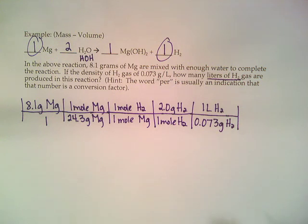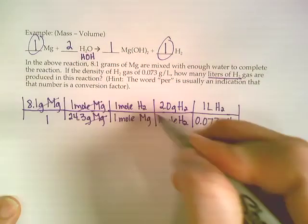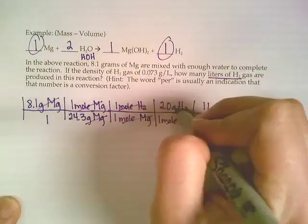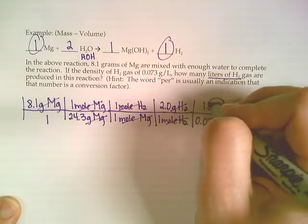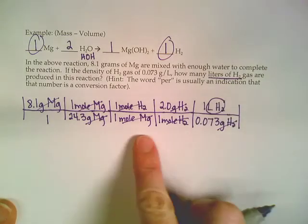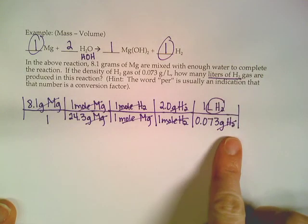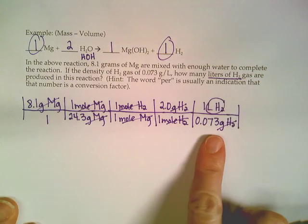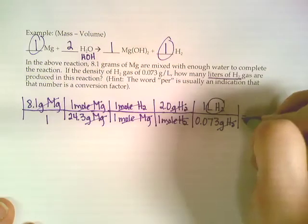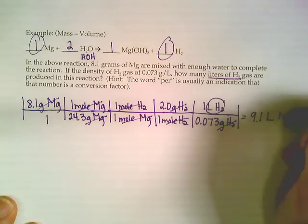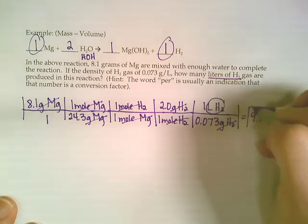Well, now we're at our liters of hydrogen. Everything else cancels out - grams of magnesium go away, so do the moles, moles of hydrogen go away, so do the grams, and then that leaves us with just liters of hydrogen. This problem looks like we get to keep two sig figs from both the 8.1, the 2.0, and the 0.073. So if you type that through on your calculator, we would get to keep 9.1 liters of hydrogen.